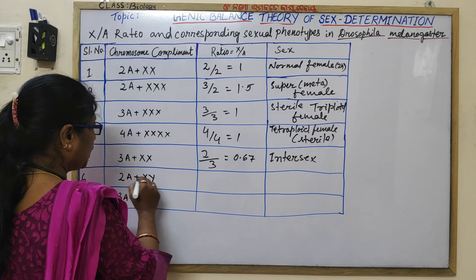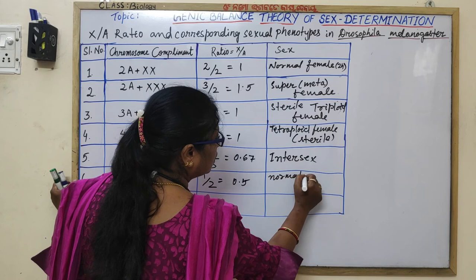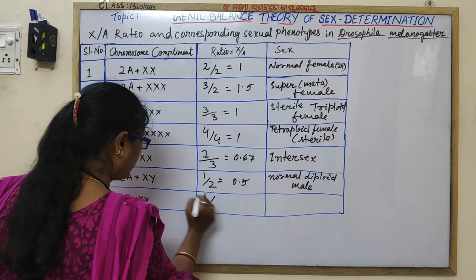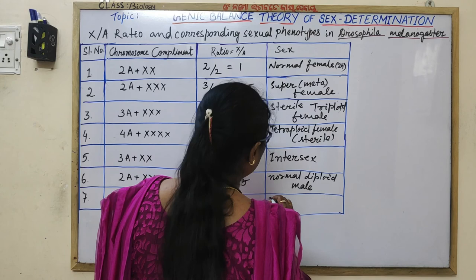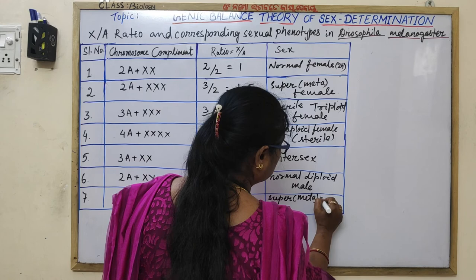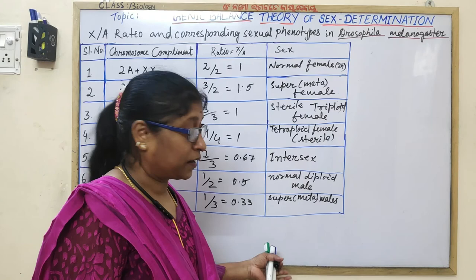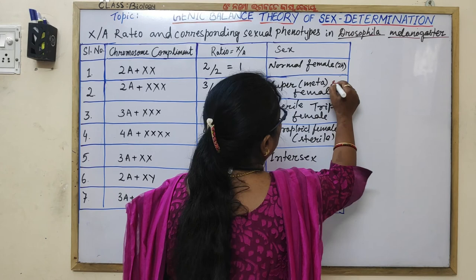When chromosome complement is 2A+XY, X/A = 1/2 = 0.5, giving a normal diploid male. When complement is 3A+X, X/A = 1/3 = 0.33, giving a super or meta male. Super females and super males are not fertile — they are also sterile.